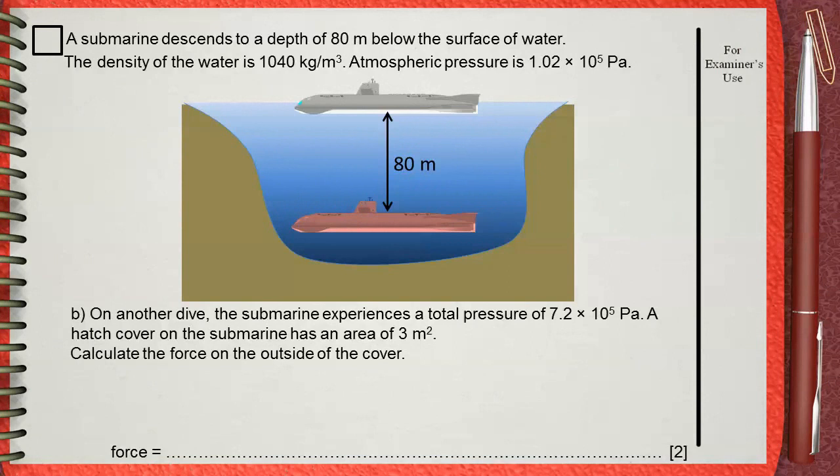A submarine descends to a depth of 80 meters below the surface of water. The density of water is 1040 kilograms per meter cubed. Atmospheric pressure is 1.02 times 10 to the power 5 pascals. Part b: On another dive, the submarine experiences a total pressure of 7.2 times 10 to the power 5 pascals. A hatch cover on the submarine has an area of 3 meters squared. Calculate the force on the outside of the cover.